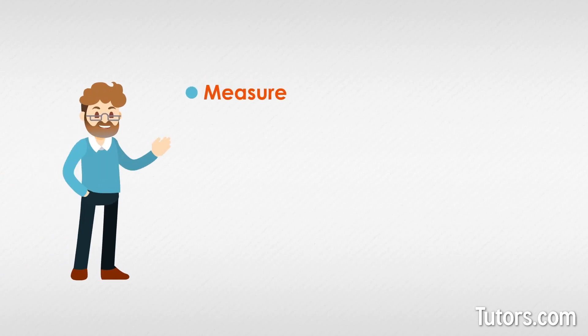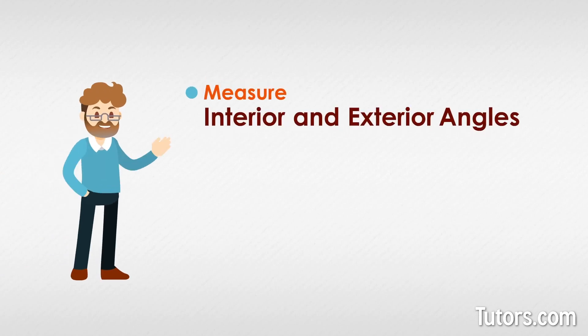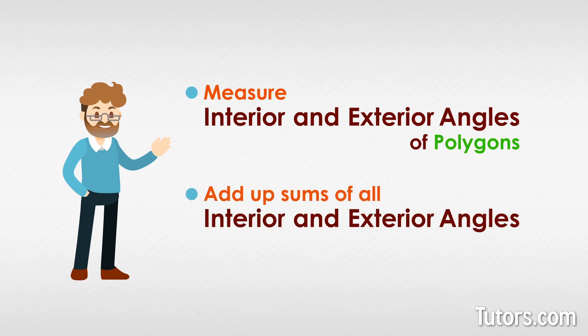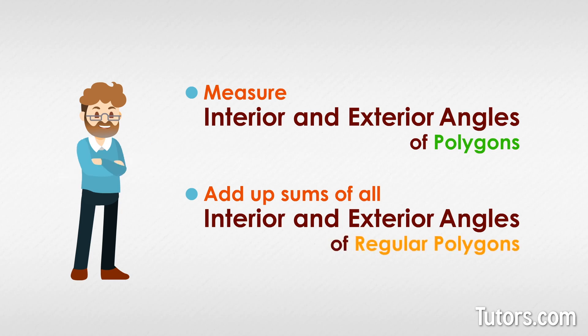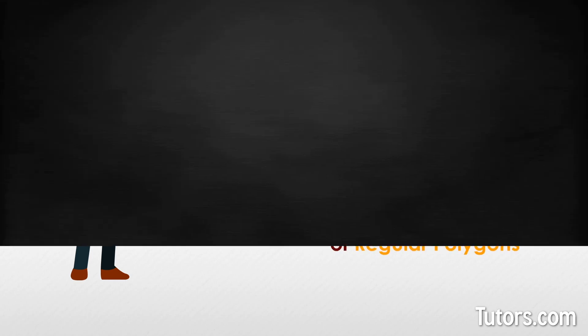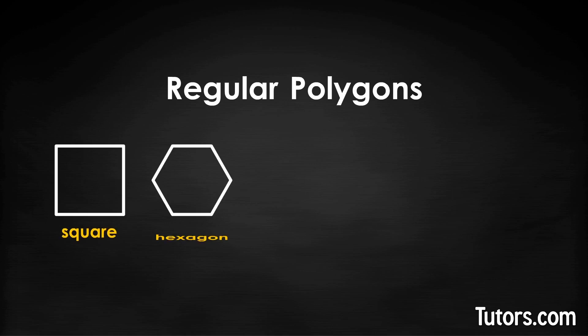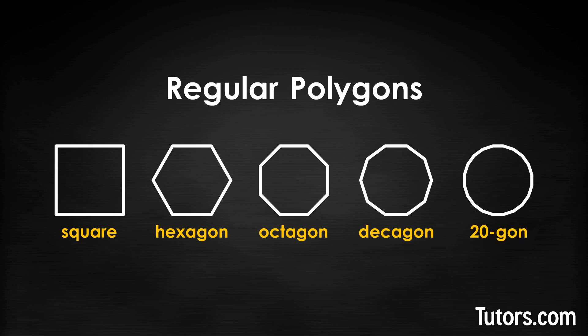With polygons, you can measure the interior angles and exterior angles. You can also add up the sums of all interior angles and the sums of all exterior angles of regular polygons. Regular polygons exist without limit theoretically, but as you get more and more sides, the polygon looks more and more like a circle.